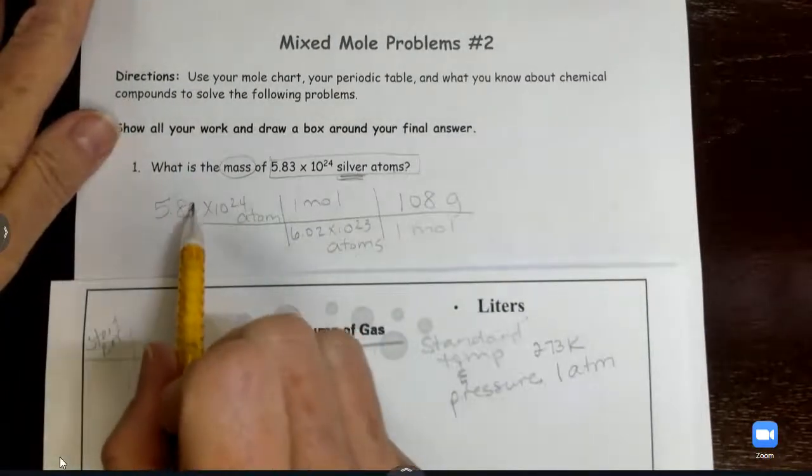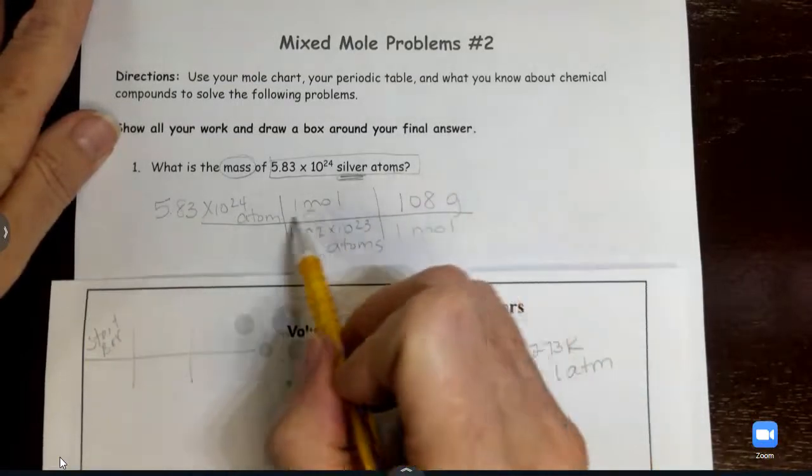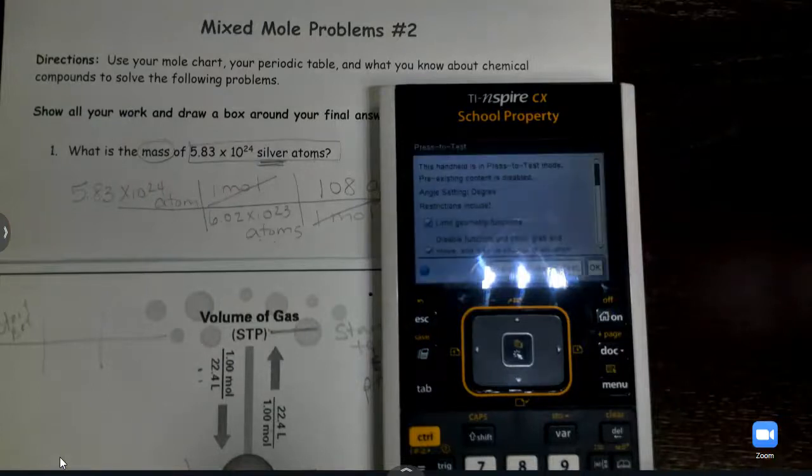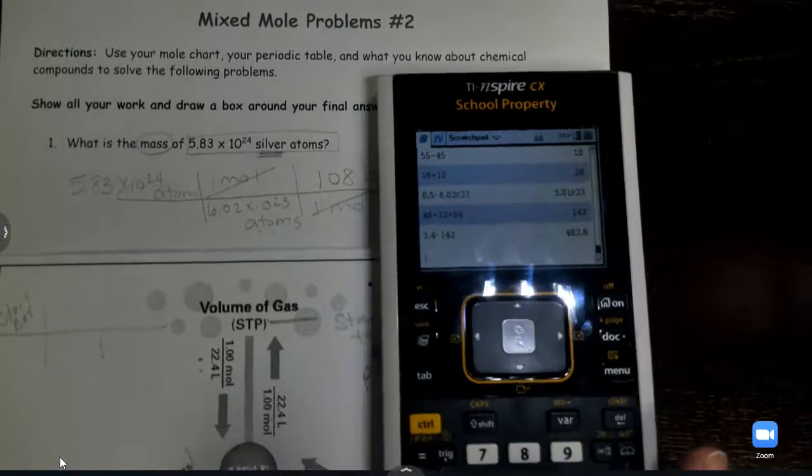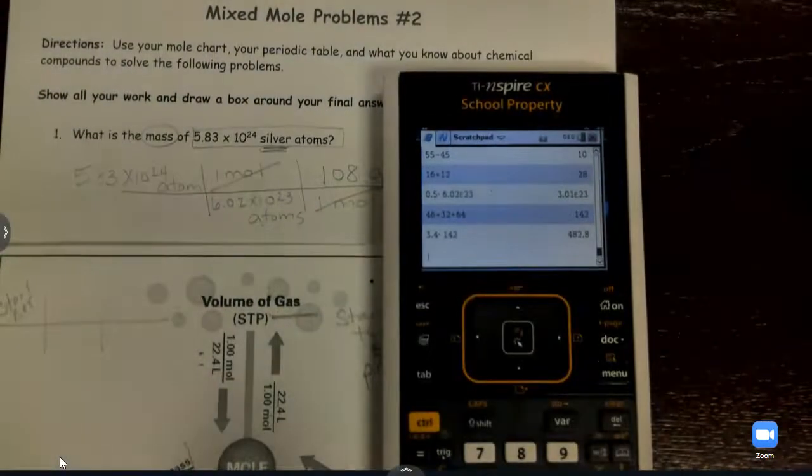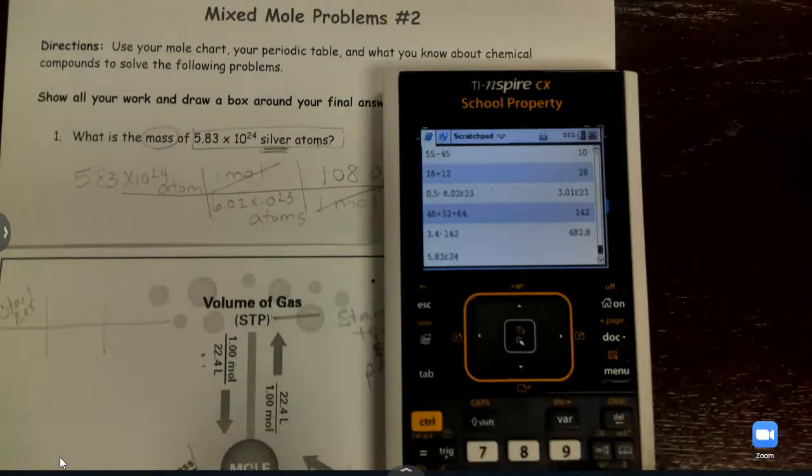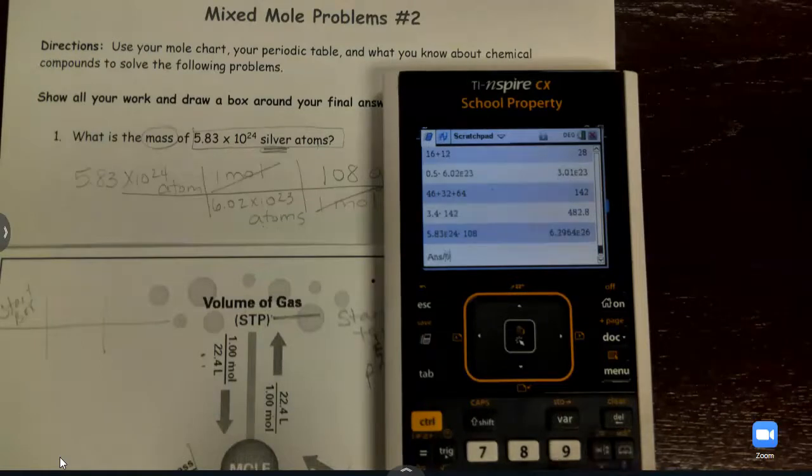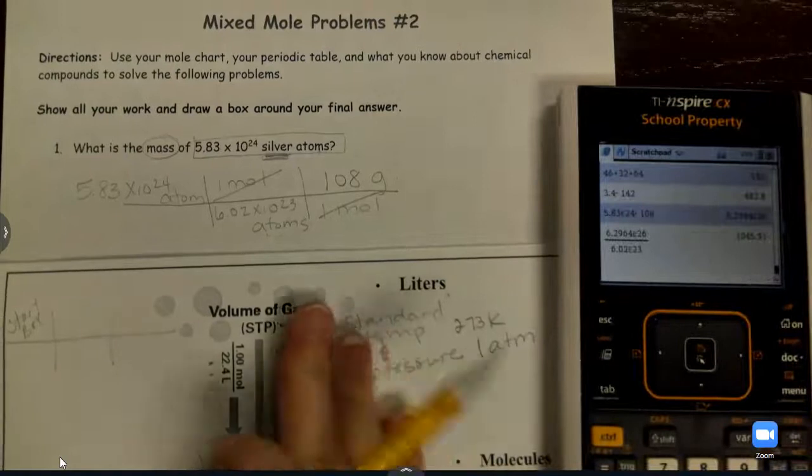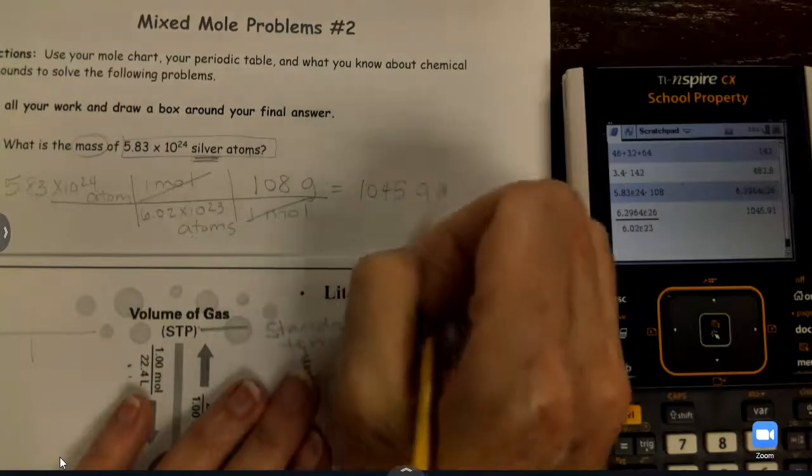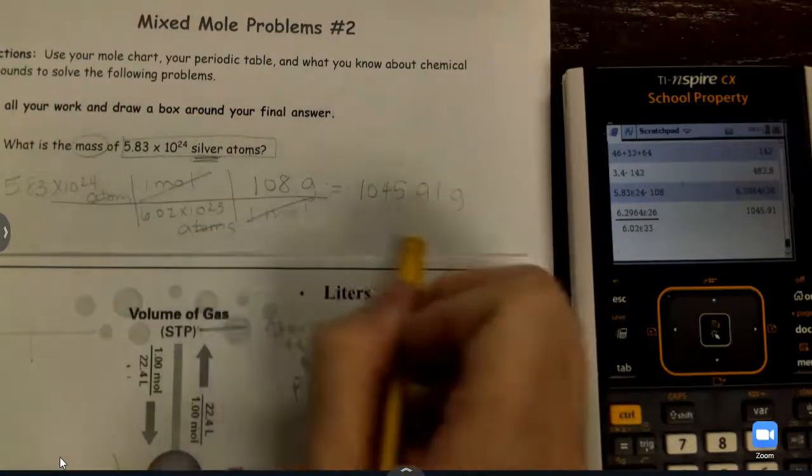So looking at this, it's the same process. You always multiply across the top, divide by the bottom. But what happens right here? These cancel each other out. So I'm going to end up putting in, now I'm going to go 5.83 EE to the 24th times 108, and then I'm going to divide that by the bottom, which is Avogadro, 6.02 EE to the 23rd. Control, enter. And there's my answer. So I'm going to have 1,045.91 grams of silver. Because these atoms cancel out, I'll be left with grams.